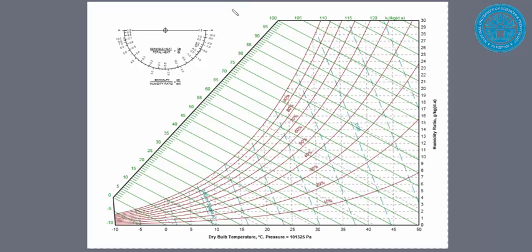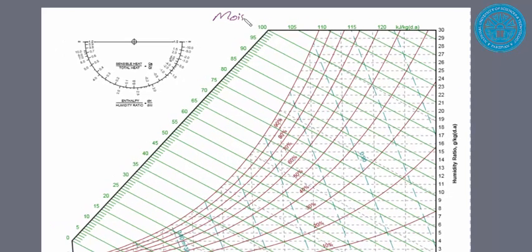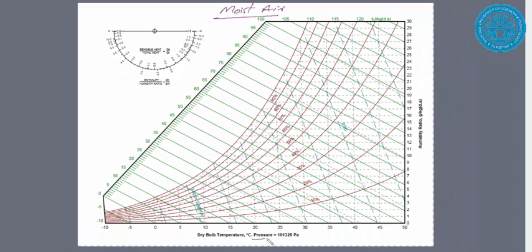This chart which you see here is for moist air - air that carries some quantity of water vapors. It is plotted for constant atmospheric pressure of 101.325 kilopascals.